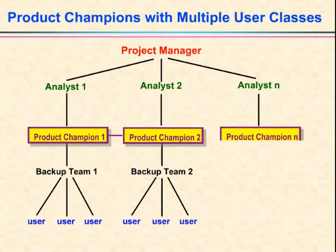This figure shows lines between the product champions, because issues will come up across multiple user classes that have to be resolved — so then you go back to your overall decision-makers. For this project, the four product champions and the three IT people I've mentioned made up our decision-making team.